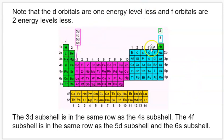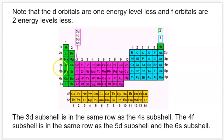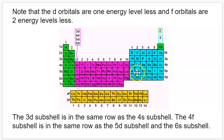So that'll be 1s2, 2s2, 2p6, 3s2, 3p6, 4s2, 3d10, 4p6, 5s2, 4d10, 5p6. That's the full electron configuration for xenon.